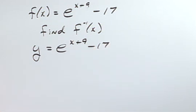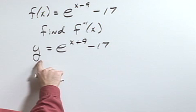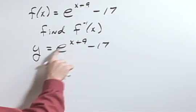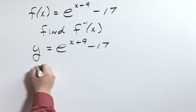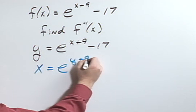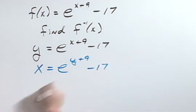Next, because we want to find its inverse, we want to exchange the x and the y. The input becomes the output, the domain becomes the range. So we can rewrite this as x equals e to the y plus 9 minus 17.